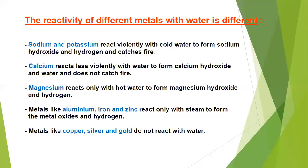In the case of iron, we have to take red hot iron, and on red hot iron if we pass steam we get Fe₃O₄ and hydrogen gas. Metals like copper, silver, and gold are very less reactive, situated at the bottom of the reactivity series, and do not react with water at any temperature.